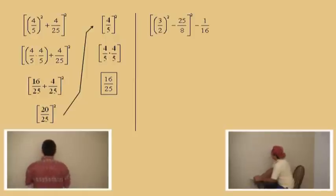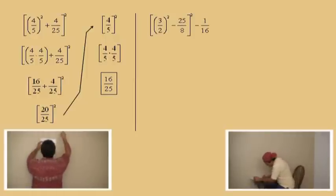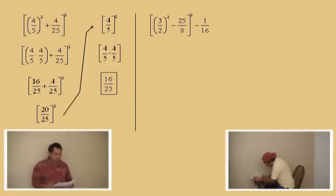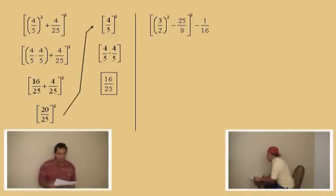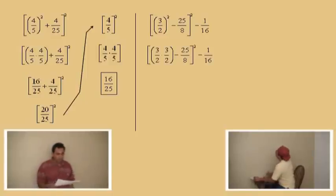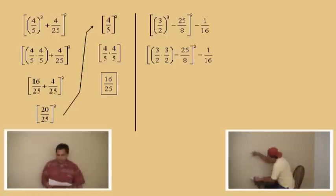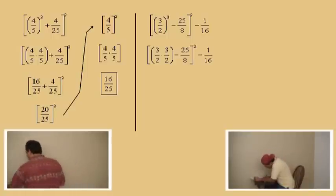3 fifths squared minus 25 over 8 — that quantity is squared — and we're subtracting 1 sixteenth. What does 3 fifths squared mean? 3 fifths times 3 fifths. Now, 3 halves times 3 halves — what is that? 9 fourths. Very good.